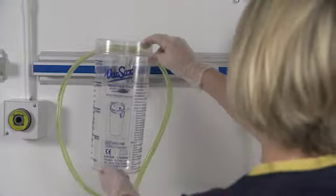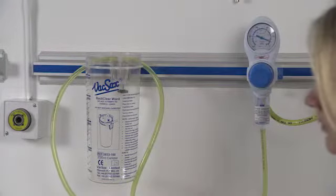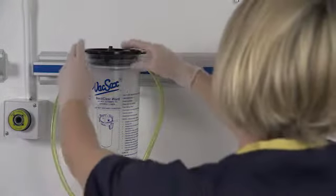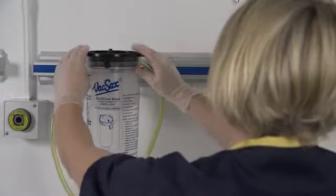Start by placing the 2.0L canister into the wall bracket. Place the Bacticleer liner into the canister and press home firmly.